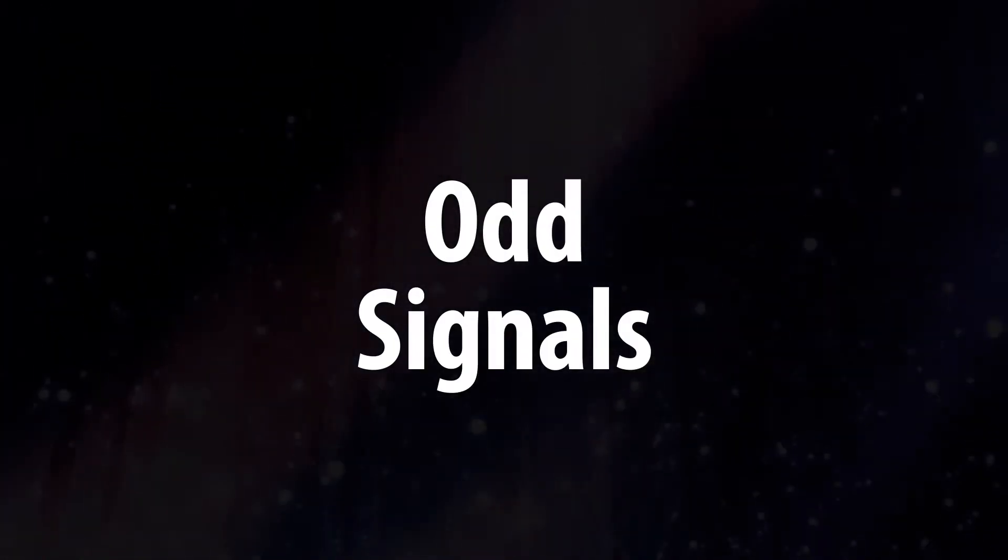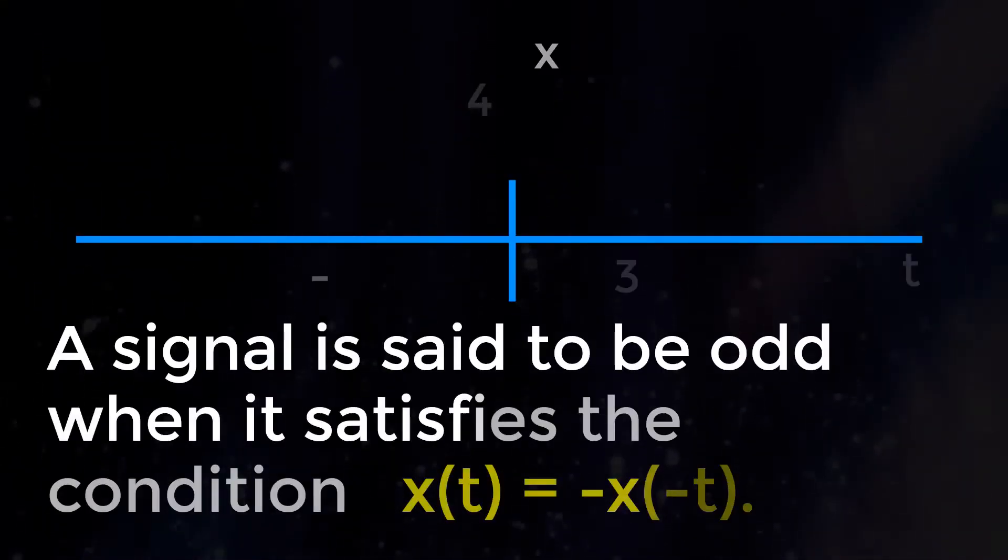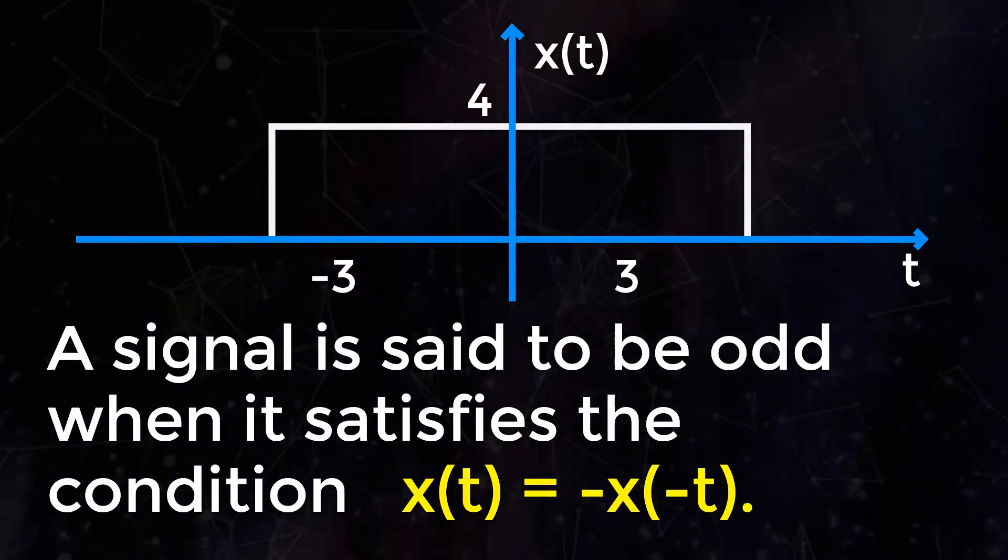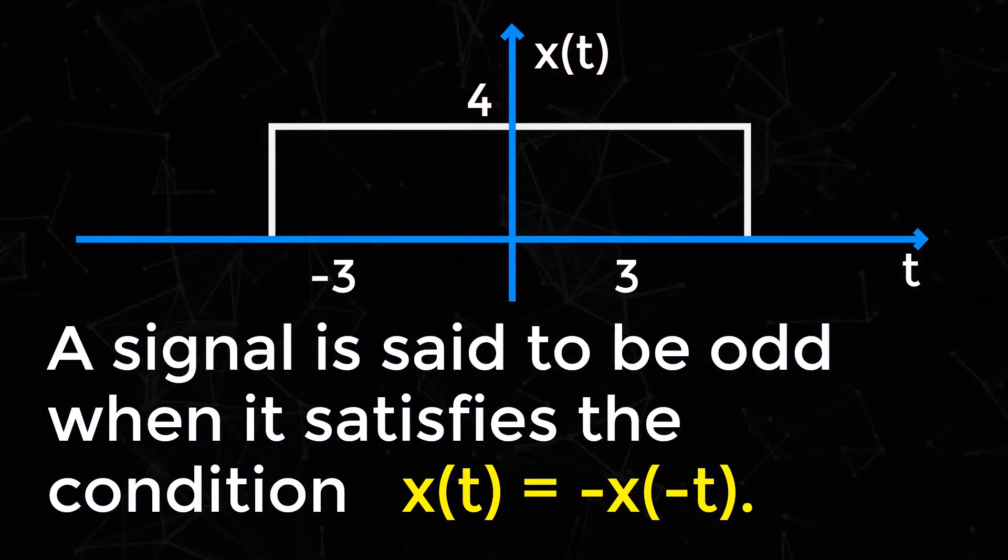Now let's look into odd signals. A signal is said to be odd when it satisfies the condition x(t) = -x(-t).